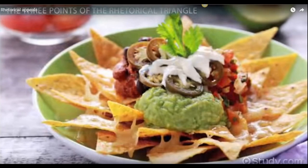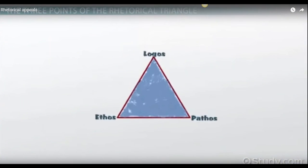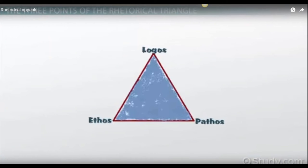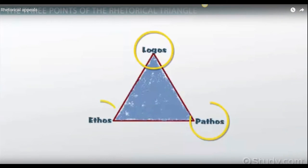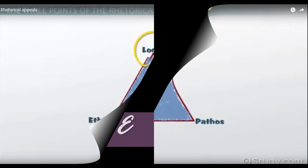Nachos can be made in any combination, with more of one ingredient and less of another. Argument works this way as well. You can try out different persuasive recipes in your writing to find the mix that suits your needs and audience. Of course, the strongest arguments are usually built on points that take advantage of logos, pathos, and ethos together. Aristotle thought that logos was the most important of the three, but not all audiences will be persuaded by logos alone.